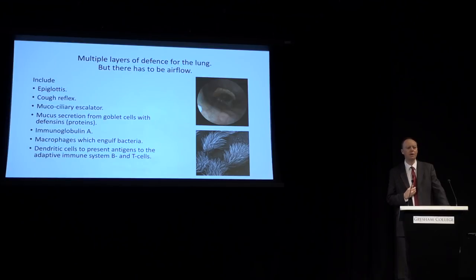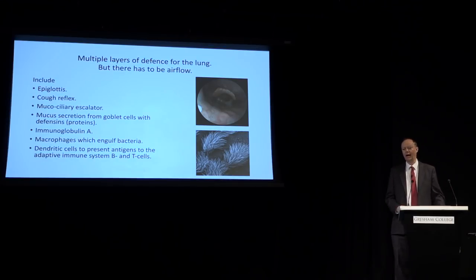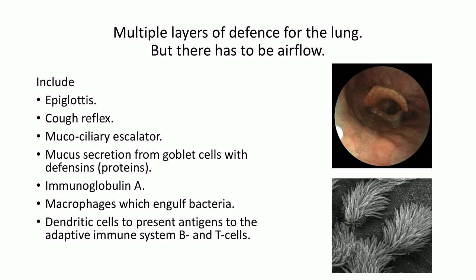They have the epiglottis, which closes off when you swallow to make sure food goes one way and air goes the other — when that occasionally doesn't happen, you know about it. There's the cough reflex, so if something settles in the wrong place, you cough it up. Very importantly, there's the mucociliary escalator — a lining of mucus where hair cells beat upward all the time, moving things up so you can swallow or cough them out. And there are proteins, cells, and antibodies from the immune system. So it has multiple layers of defence, yet it is very large and very open.